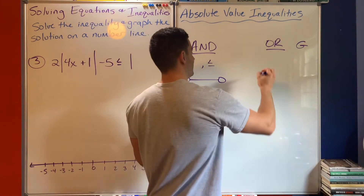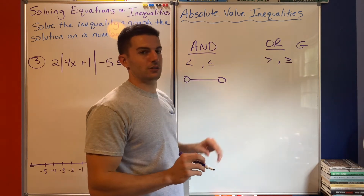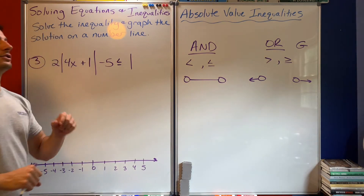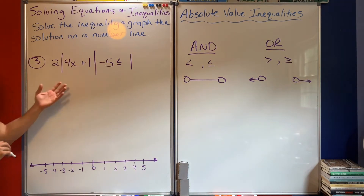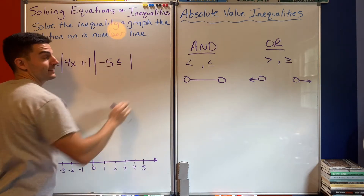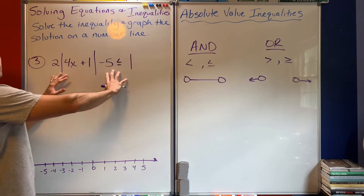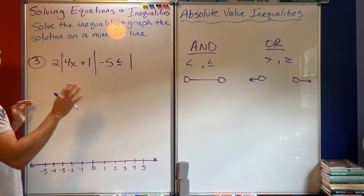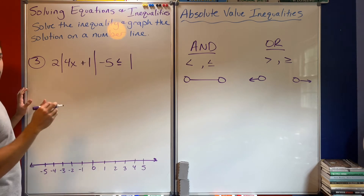'Or' is either greater than or greater than or equal to, and on the number line that looks like two separate arrows going in opposite directions. You might notice right away this is a less-than-or-equal-to and think it'll be an 'and', but we're really only worried about it once the absolute value is by itself and we see what the inequality sign is — because sometimes it does change.